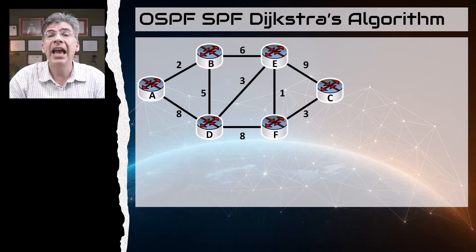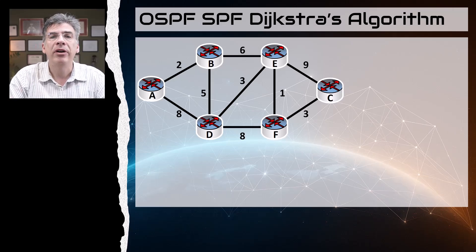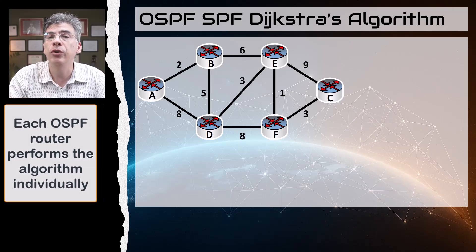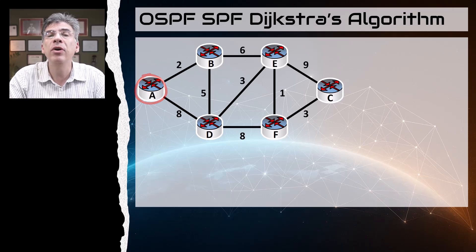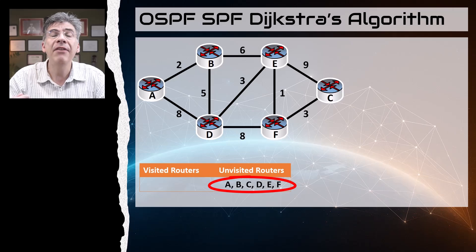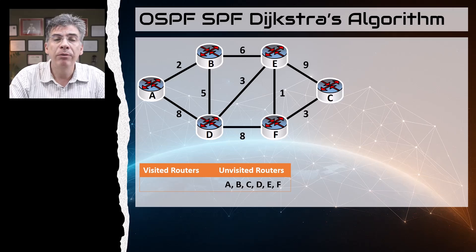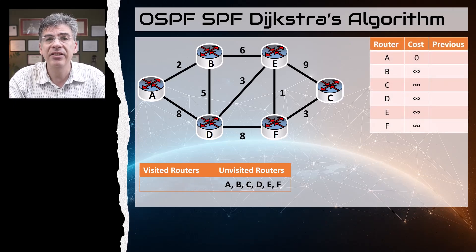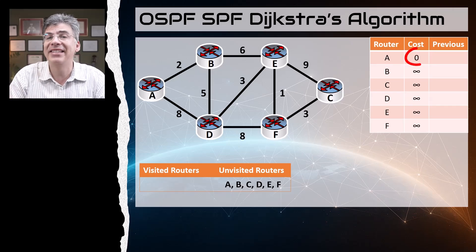Here is the topology we'll be working with today, with the costs of each individual link. We will go through the process of Dijkstra's algorithm step by step — remember this algorithm is run by each router individually. We will look at it from the point of view of router A. First, we define a set of unvisited routers and a set of visited routers; at the beginning, all routers are unvisited. Every time we perform the algorithm at a specific router, that router moves from the unvisited set to the visited set. We also create a table indicating the cost or distance to reach each router from router A — the distance to A is zero, and the distance to all other routers is unknown, so we put a value of infinity.